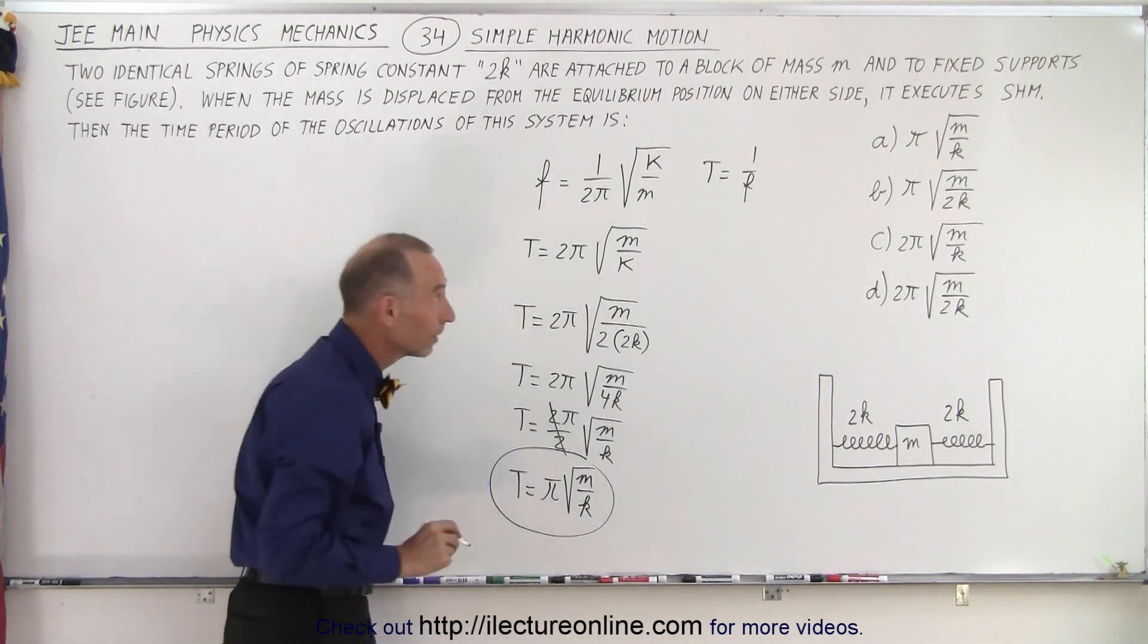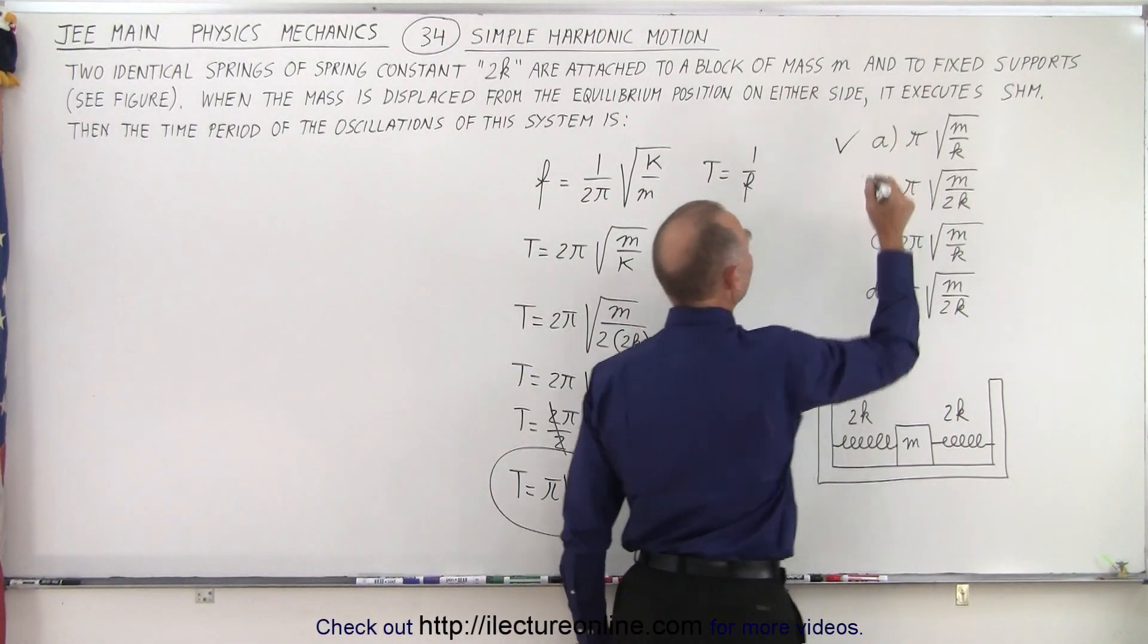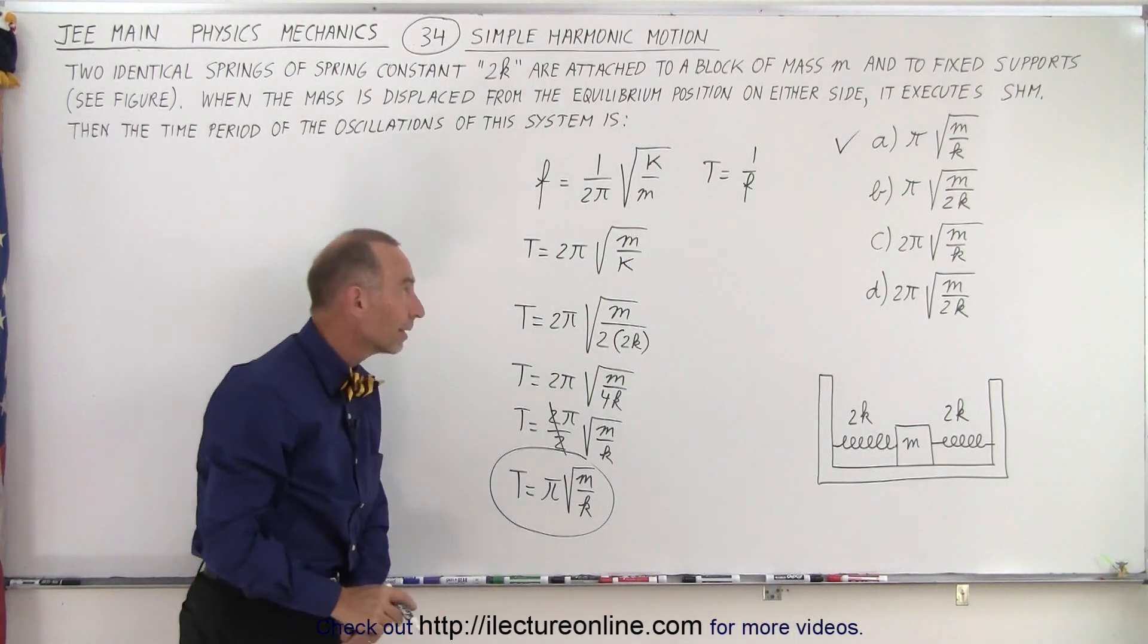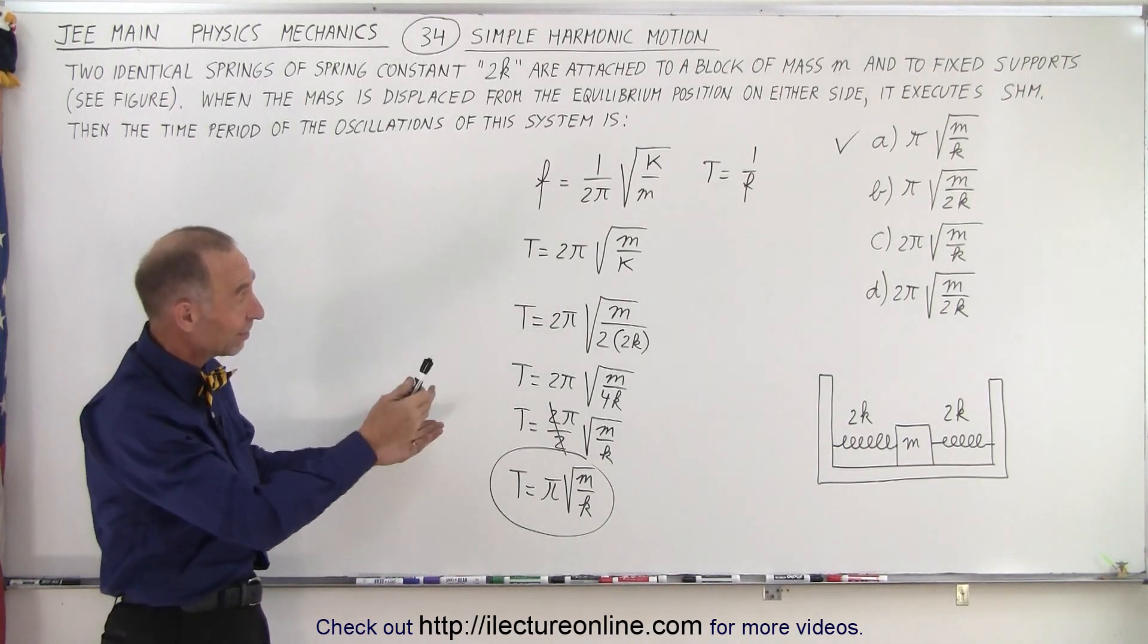Now when we look at the answers, certainly there's one of them that matches—it's answer a. So it is indeed π times the square root of m over k, and that is how we solve the problem.